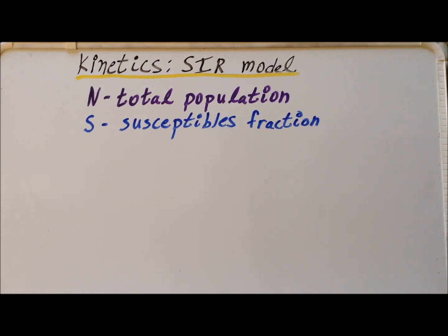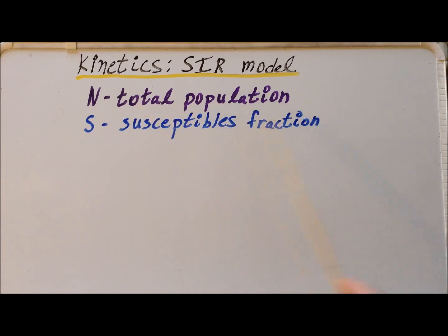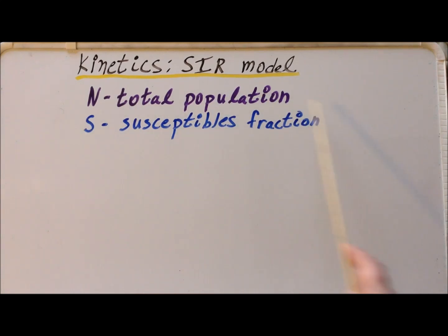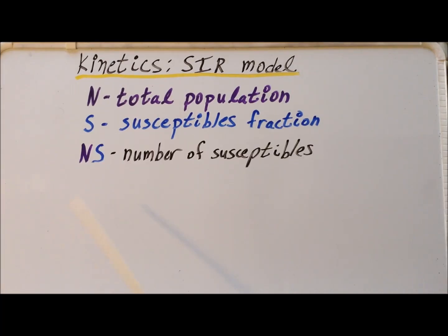The first important variable in the SIR model is capital N, and this is the total population of human beings that could potentially be infected by some particular disease. We have a particular fraction S, which is the susceptible fraction — the proportion of the total population that has the possibility of becoming infected. This is some decimal or fractional number between zero and one. Therefore, N times S gives us the actual number of susceptible individuals in our total population.